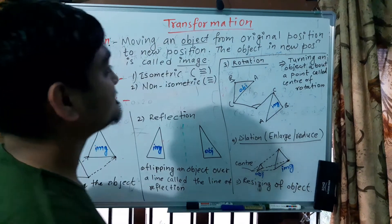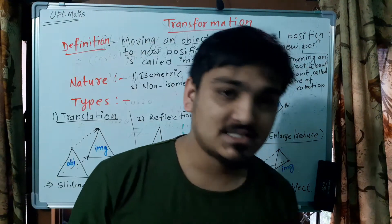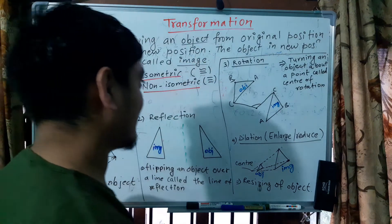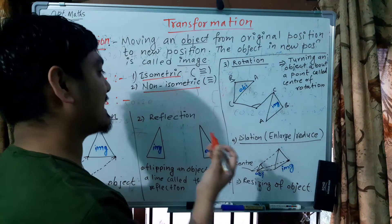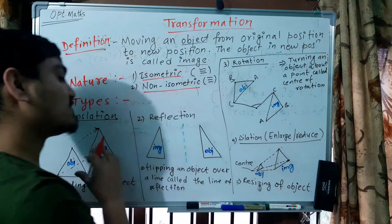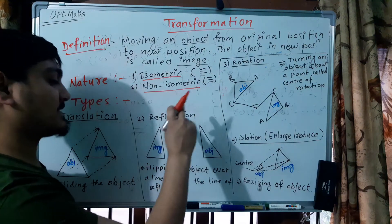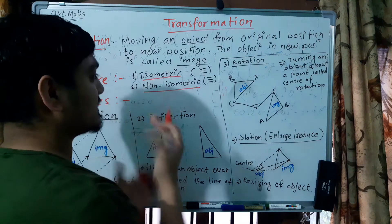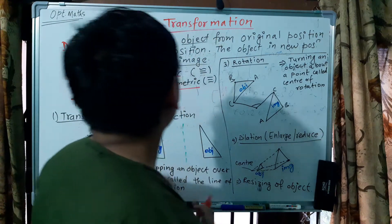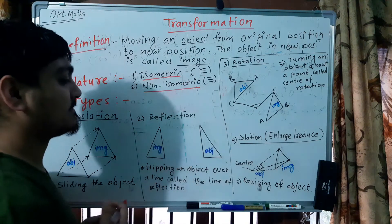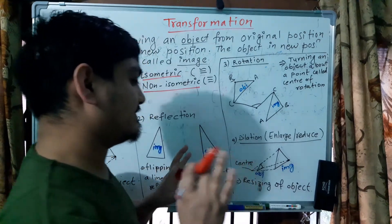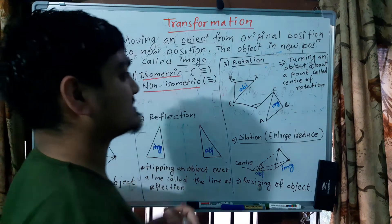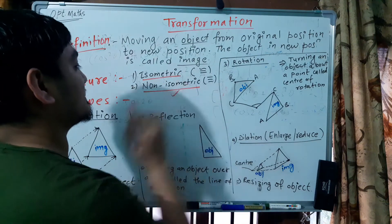This means moving the object from its original place to a new place. Now, the nature of transformation is basically of two kinds: isometric and non-isometric. Isometric transformation preserves the shape and size of the object. Non-isometric transformation does not preserve the shape and size.